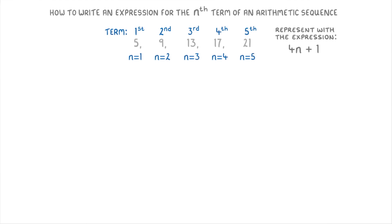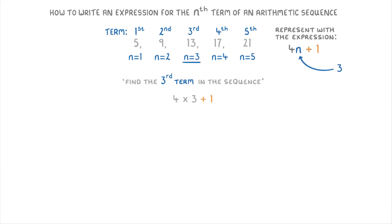So if we were asked to find the third term in the sequence, we're looking for the term where n equals 3. All we have to do is plug the number 3 into our expression. So we'd do 4 times 3, because n is 3, plus 1, which gives us 12 plus 1, or 13. So we know that the third term is 13.